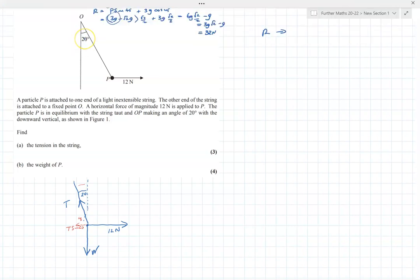We have T sine 20 going left minus 12 equals zero, or forces left equal forces right. T sine 20 equals 12, so T equals 12 divided by sine 20. That comes to 35.1 newtons. I would give at least three significant figures here. That's basically answered part a.